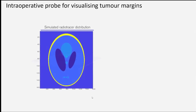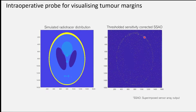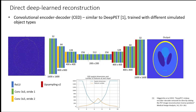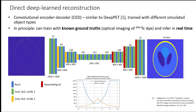Just with simulation to start off with: there's the Shep-Logan phantom. Here is a simulation of our sensor array output by scanning that intraoperative probe over this radiotracer distribution. What we've done is train up a convolutional encoder-decoder, very much inspired by the DeepPet architecture by Haagstrom et al., trained with three or so object types. What's exciting is that in principle we could measure known ground truths — for example, have a technetium-99M-labeled compound which is also an ink or dye at the same time, so we could do optical imaging and therefore get knowledge of the ground truth to supervise training of this network.